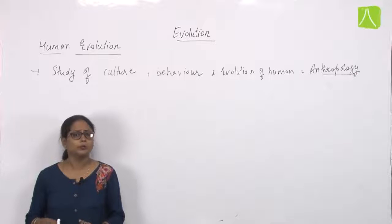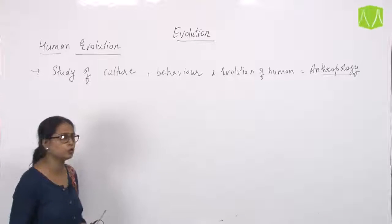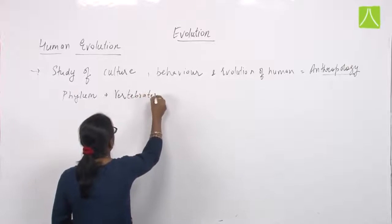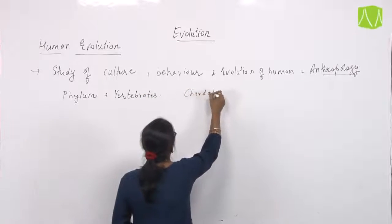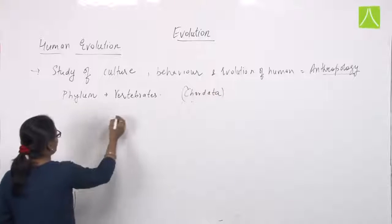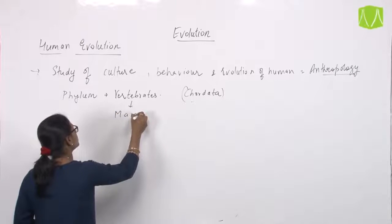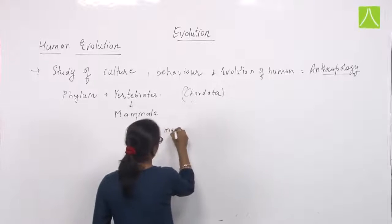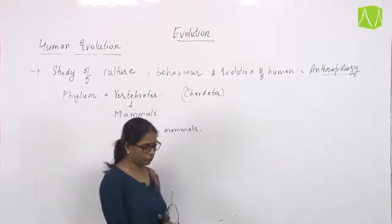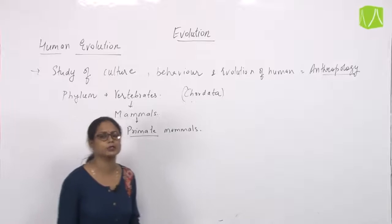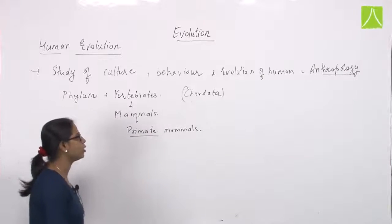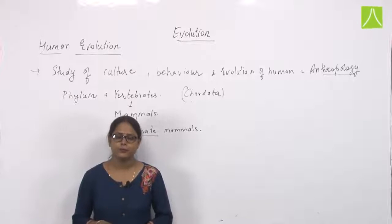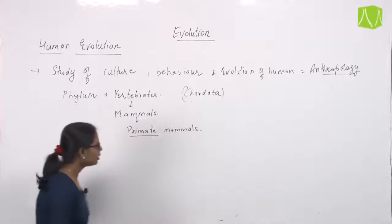When we talk about human evolution, we first need to know about human beings. We belong to phylum vertebrates — we are all chordates. We are all mammals, and specifically we are primate mammals. Primate mammals are those in which the menstrual cycle runs in females instead of the estrus cycle. This is the key difference between primates and non-primates, as all other mammals follow the estrus cycle.